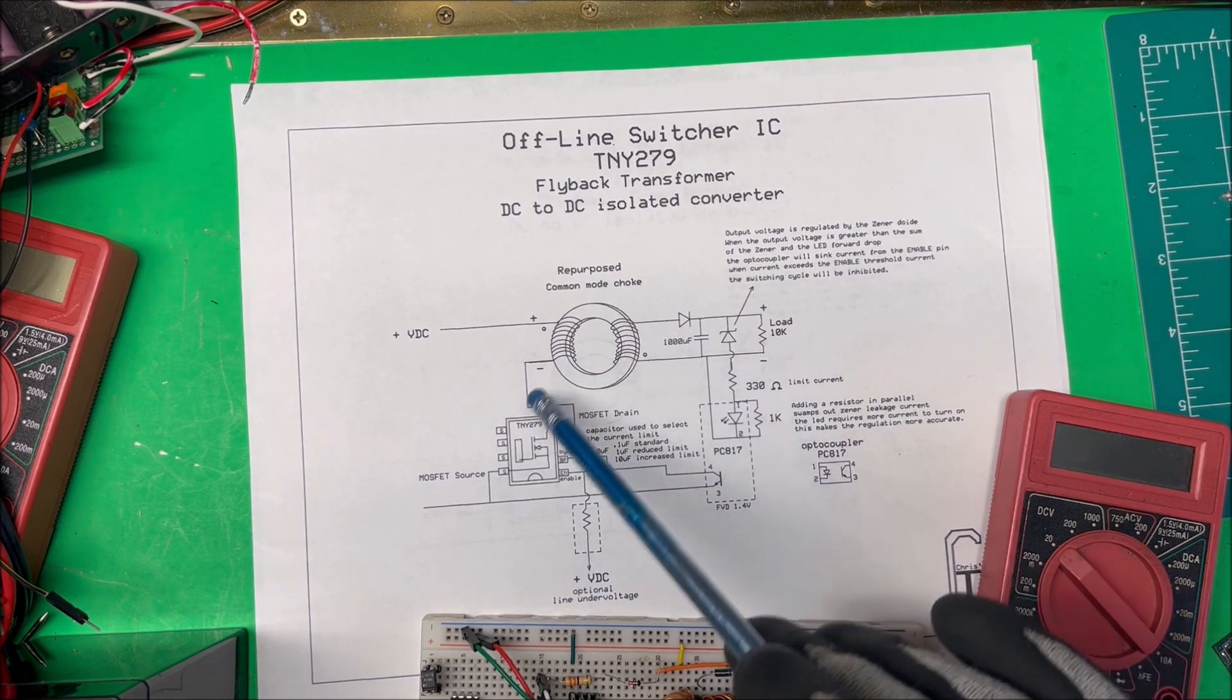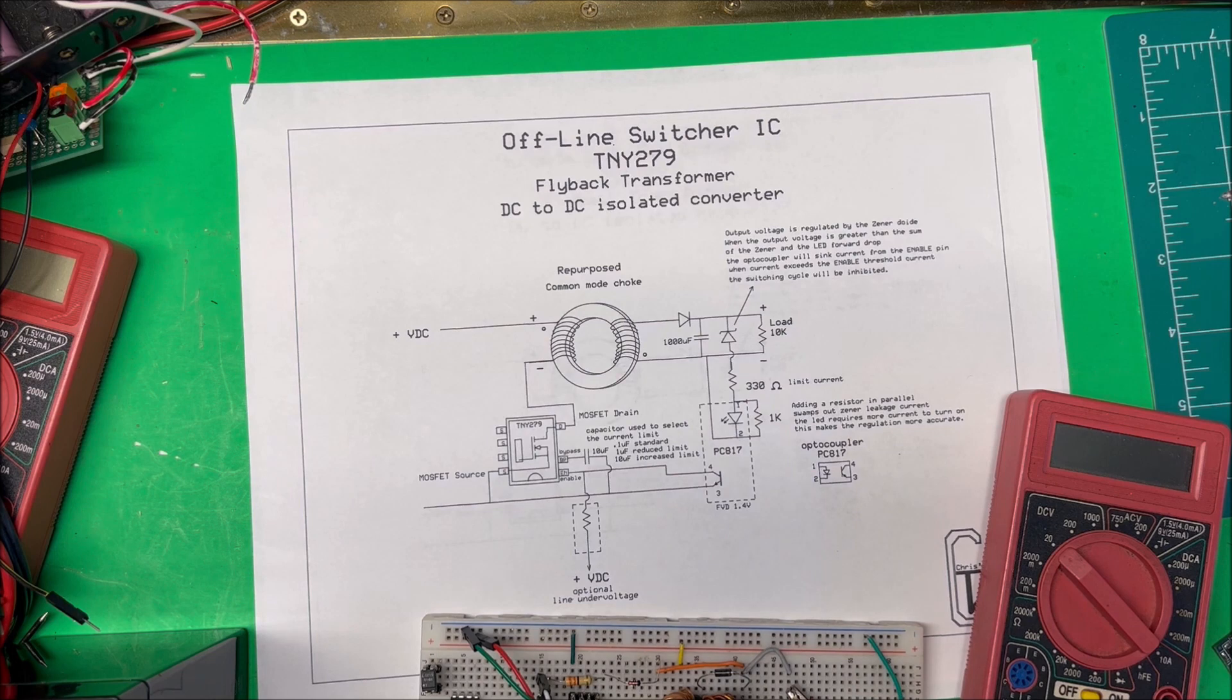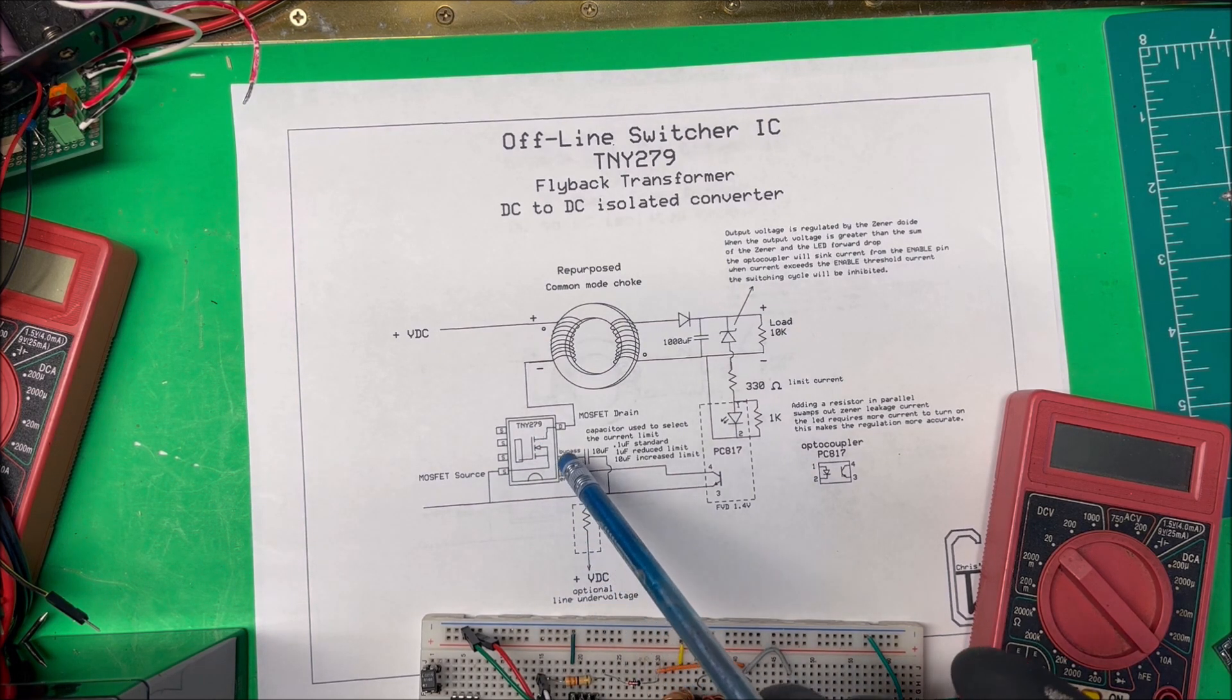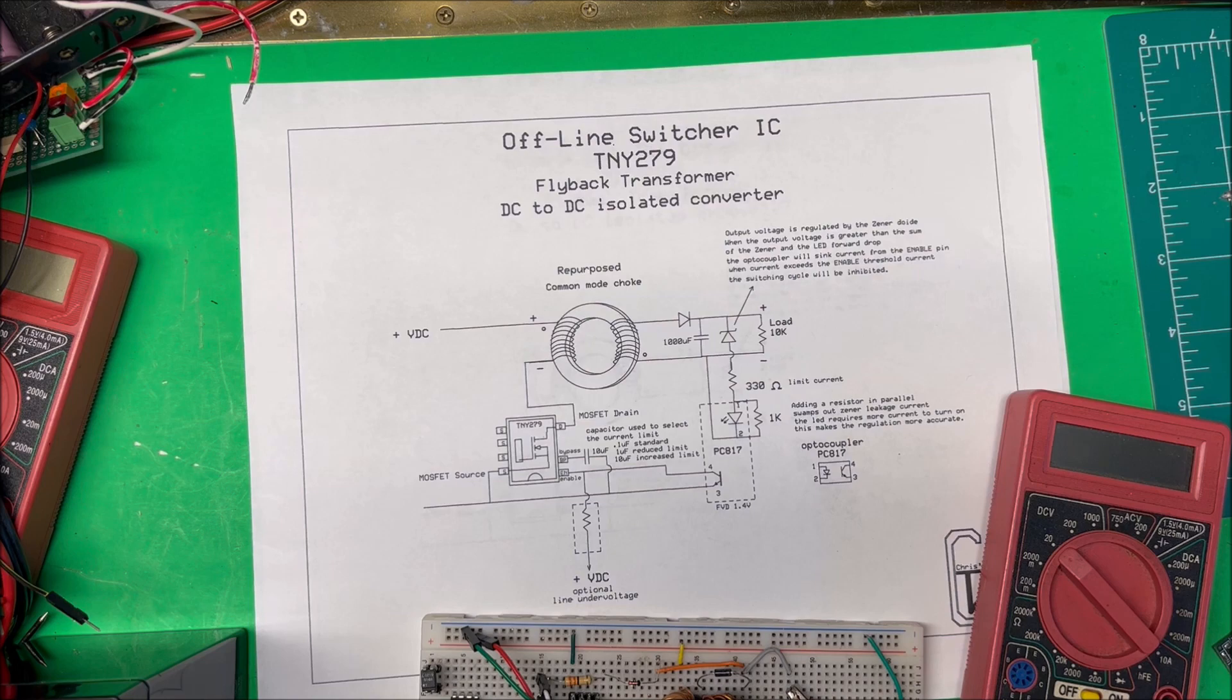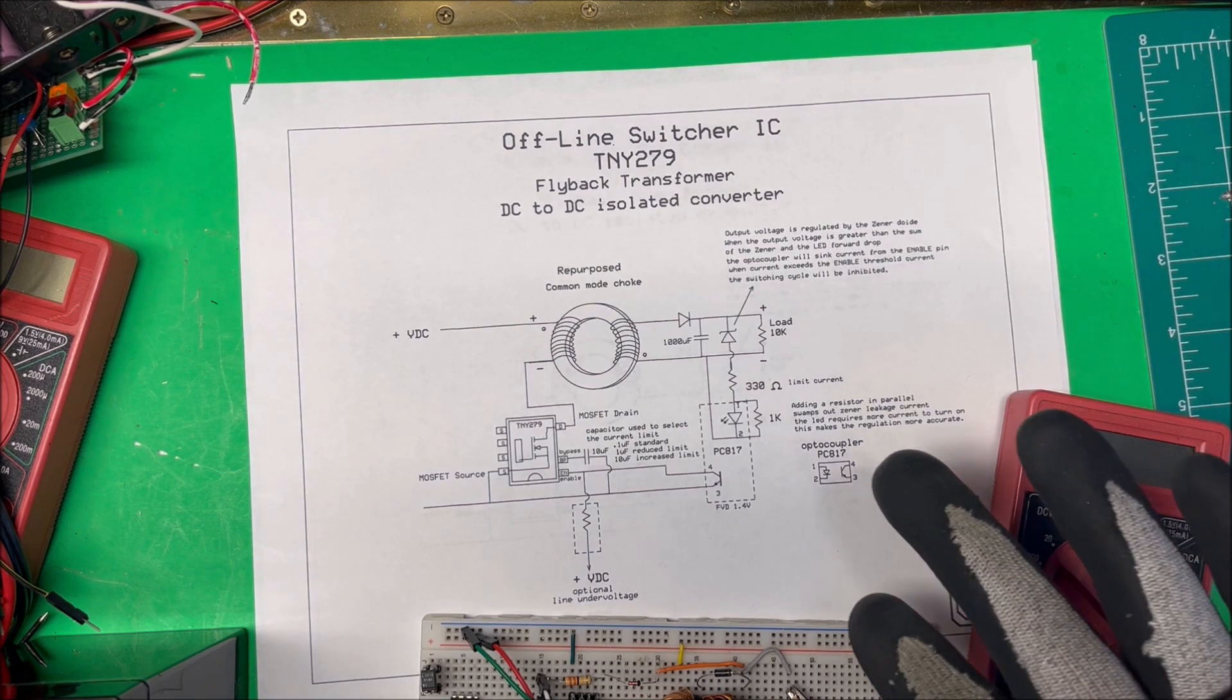Basically the MOSFET and two other pins - one for the current and one to regulate the voltage on the output. We're going to see if it works. Here it is right there. I'm going to put 12 volts on the input and see what happens.